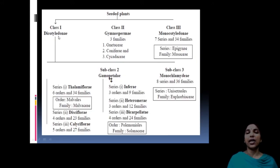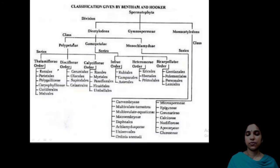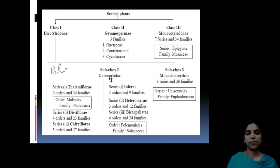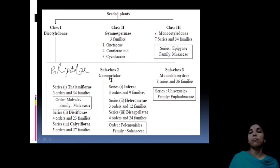Looking at the overall picture: Class 1 is Dicotyledons, Class 2 is Gymnosperms, Class 3 is Monocotyledons. Dicotyledons are divided into subclass 1 Polypetalae, subclass 2 Gamopetalae, and subclass 3 Monochlamydeae. Under Polypetalae: series Thalamiflorae (6 orders), Disciflorae (4 orders), Calyciflorae (5 orders). Under Gamopetalae: Inferae (3 orders), Heteromerae (3 orders), Bicarpellatae (4 orders). Under Monochlamydeae: 8 series and 36 families.